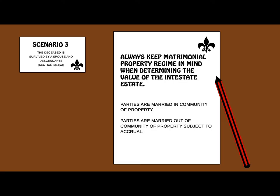When dealing with a surviving spouse and descendants, it is important to keep the matrimonial property regime in mind. The share inherited by a surviving spouse is unaffected by any amount to which he or she might be entitled in terms of the matrimonial property laws. Where a spouse is married in community or under the accrual system, the surviving spouse's share of the joint estate or the accrual share does not form part of the intestate estate of the deceased. The amount to which the surviving spouse is entitled in terms of the applicable marital property regime is deducted first, and the balance after all liabilities are paid is then distributed between the surviving spouse and the descendants.